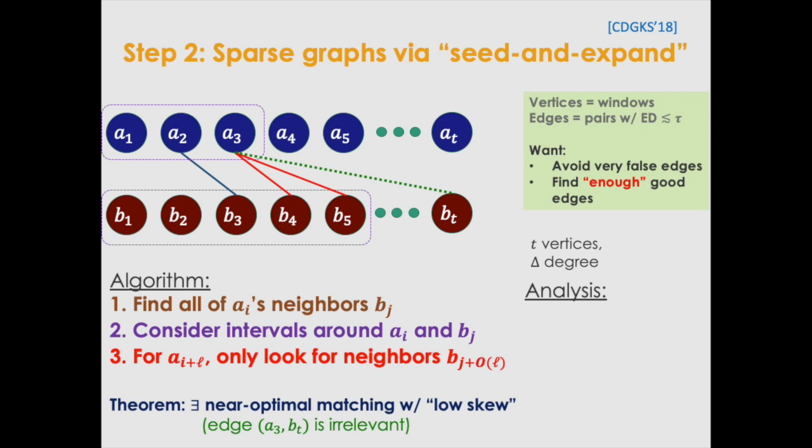And if we think about this carefully, if we use approximately t queries, we can learn everything in an interval of size about t over delta.